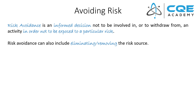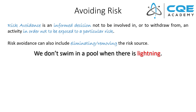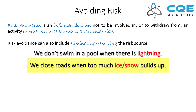We also use risk avoidance in our everyday life. For example, we don't swim in a pool when there's lightning — if you're swimming and there's lightning, that changes the risk associated with being in the pool, and we avoid that risk by simply getting out of the pool. Similarly, if it's snowing or there's ice on the roads, we close the roads, avoiding the risk of driving on an icy road.